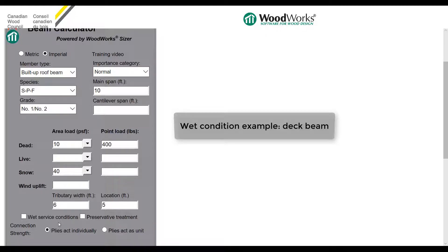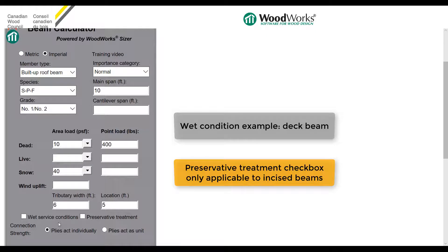Let's also add a point dead load of 400 pounds. The location of the point load will be 5 feet away from the beam's left support. Next are the wet service and preservative treatment checkboxes. If the member is exposed to an outdoor environment or has been treated and incised, you may want to check these boxes. In this example, I'm going to check both.